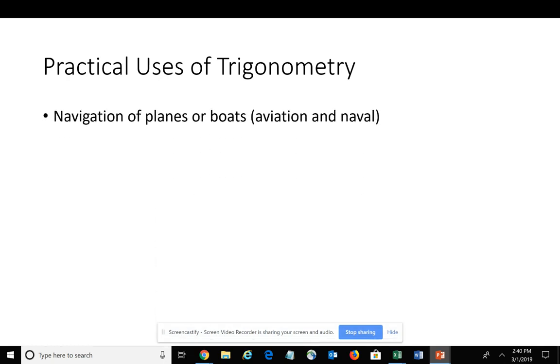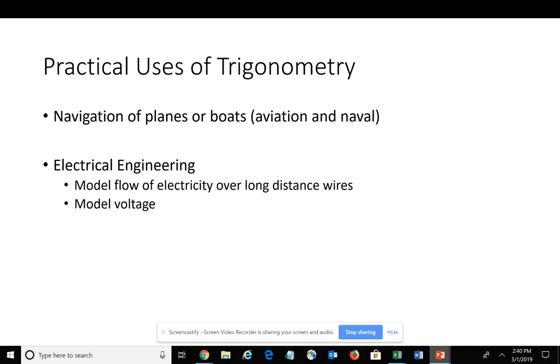Obviously navigation was one of the primary uses for the Greeks—how to navigate by the stars using astronomy. Electrical engineers can model the flow of electricity along power lines using trigonometry and also model the voltage flowing through those long-distance wires.